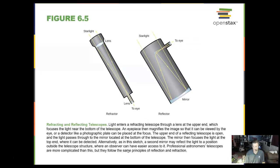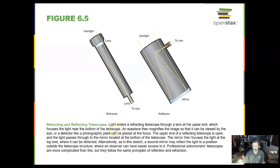The difference between refracting telescopes and reflecting telescopes is that refracting telescopes spin light through a lens, a glass lens. Whereas a reflecting telescope reflects light off of a mirror through another mirror, and then goes to an eyepiece, which is the lens.